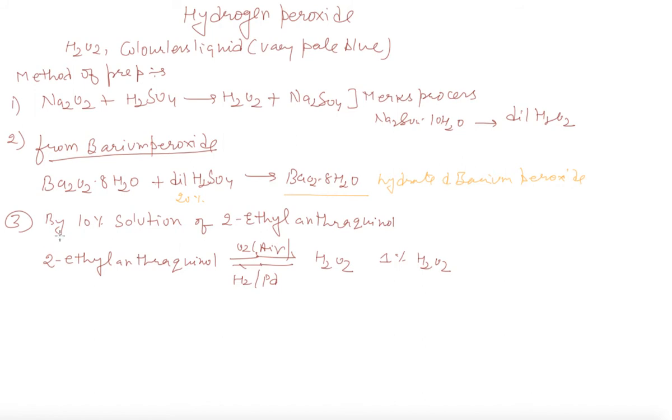Third method: by 10% solution of 2-ethyl anthraquinone. In this process, air is passed through 10% solution of this compound in a mixture of benzene and alcohol containing 7 to 10 carbon atoms with hydroxyl groups, and in this way we will get H2O2.